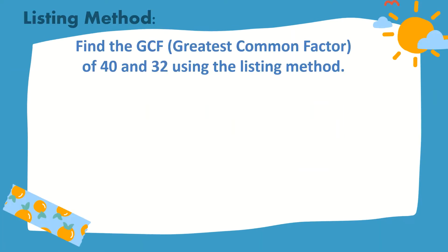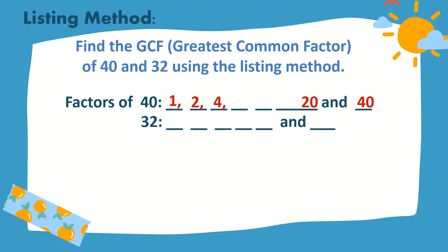Find the GCF or Greatest Common Factor of 40 and 32 using the Listing Method. Factors of 40, we have 1 and 40, 2 and 20, 4 and 10, 5 and 8. For 32, we have 1 and 32, 2 times 16, 4 times 8.